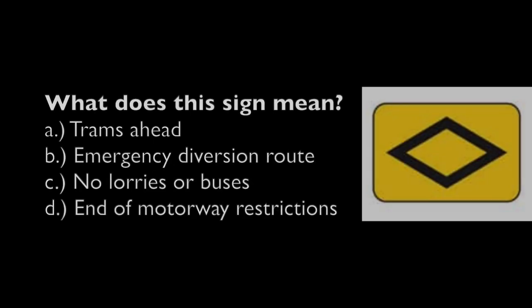What does this sign mean? A. Trams ahead. B. Emergency diversion route. C. No lorries or buses. D. End of motorway restrictions.